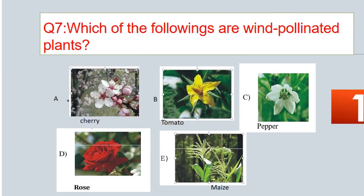Question No. 7. Which of the following are wind-pollinated plants? Options are: A. Cherry. B. Tomato. C. Pepper. D. Rose. E. Maize.